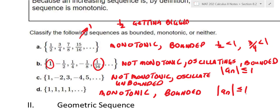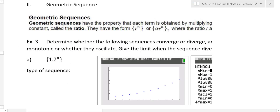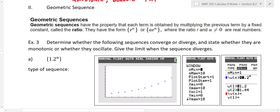Whether you just say 'bounded' or identify the bounding number, the key is recognizing the pattern. Now let's talk about geometric sequences. A geometric sequence has the property that each term is obtained by multiplying the previous term by a fixed constant. For example, starting with one and multiplying by two each time: one, two, four, eight — that's geometric with ratio r equals two.